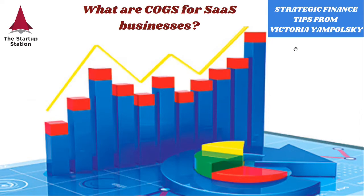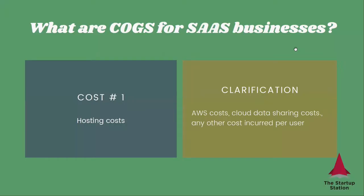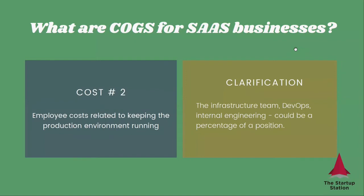Typically for tech businesses, most of your costs will be fixed because you have to build the product. But specifically for SaaS, there are a few costs which are variable, and I want to discuss them here. Number one: hosting costs. An example will be AWS, cloud data sharing costs, any other costs incurred per user in hosting. And then there will be employee costs related to keeping the production environment running, so that you can service existing subscriptions. Here we're talking about the infrastructure team, dev ops, internal engineering.